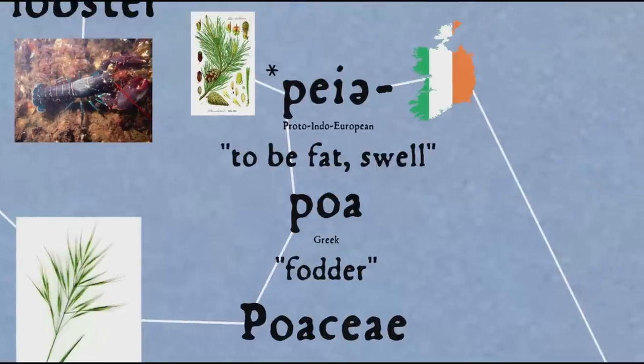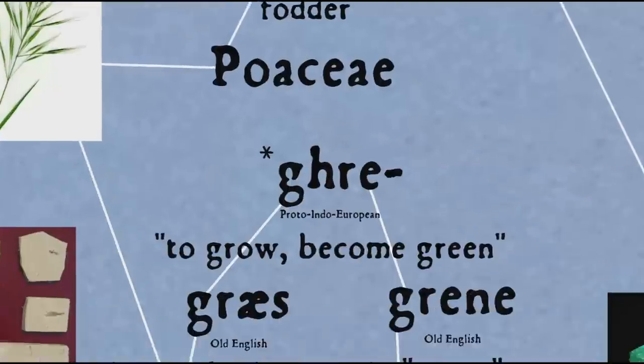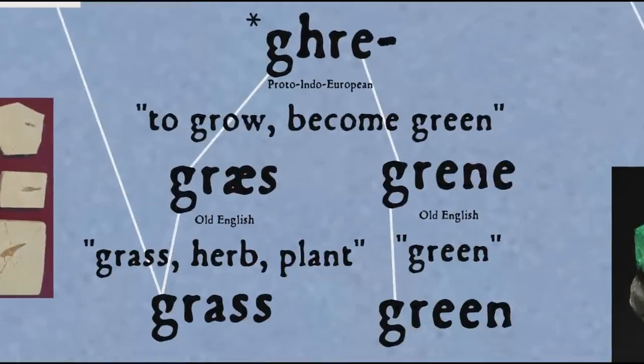The family name Poaceae was coined from Greek 'poa' (fodder), from the Proto-Indo-European root 'pei(H)', meaning to be fat or swell — also the source of 'fat', 'pine', 'Irish', and 'pinot', as in Pinot Grigio or Pinot Gris which we saw earlier. The words 'grasshopper' and 'grass' come from the root 'ghrō' (to grow, become green), also the source of 'grow', 'graze', possibly 'herb', and the basic colour term 'green'.